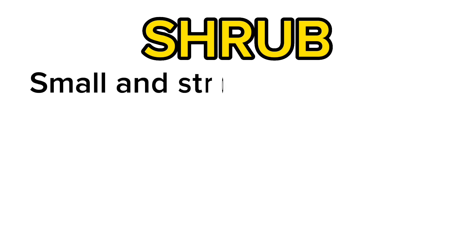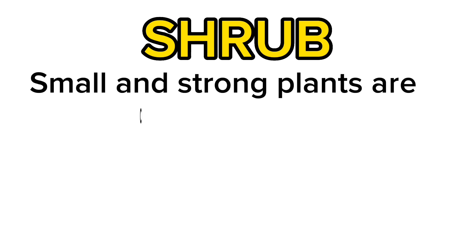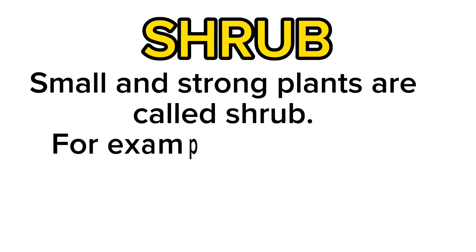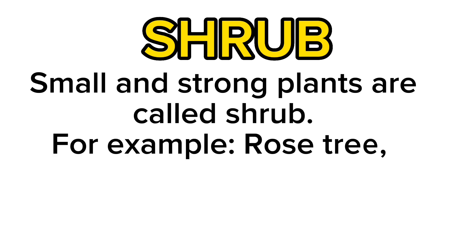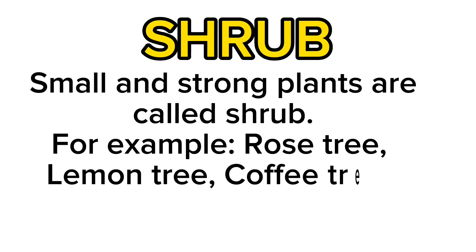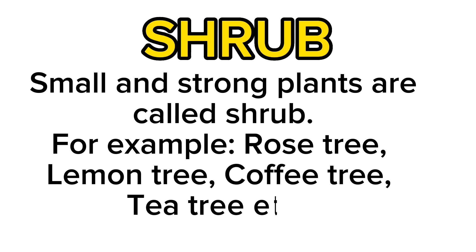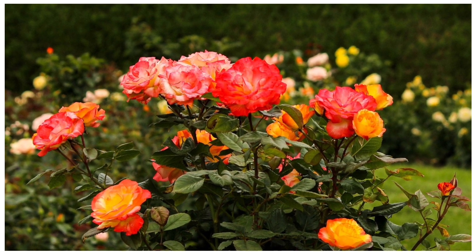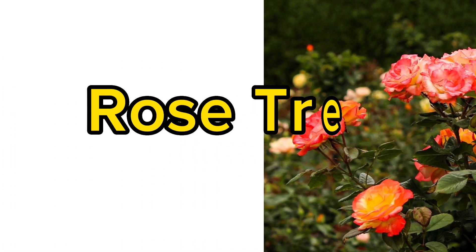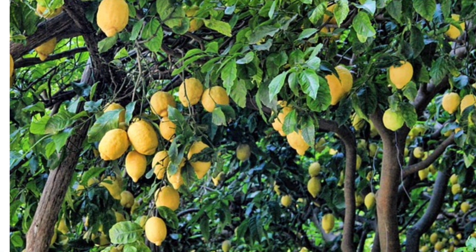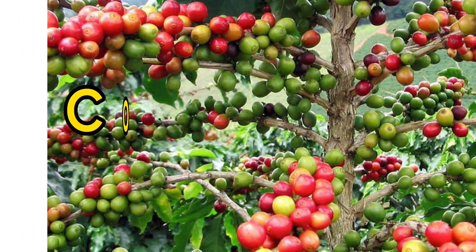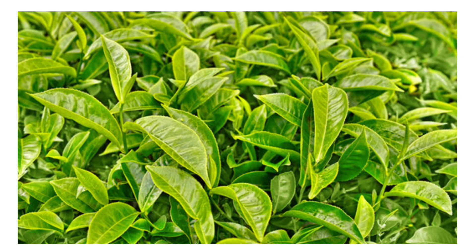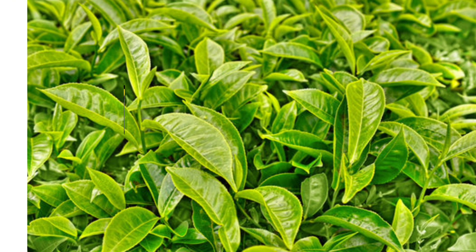Shrub. Small and strong plants are called shrub. For example, rose tree, lemon tree, coffee tree, tea tree, etc. Rose tree. Lemon tree. Coffee tree. Tea tree.